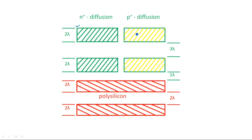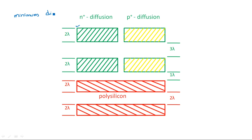If two N+ diffusion layers are running side by side, the minimum spacing or gap between them should be 3 lambda. Similarly, if two P+ diffusion layers are running side by side, we must maintain a minimum spacing of 3 lambda. So the thickness of N+ and P+ diffusion is the same — 2 lambda — and the spacing between two N+ or P+ regions must be a minimum of 3 lambda. All these are minimum dimensions; above that is accepted, but below is not.